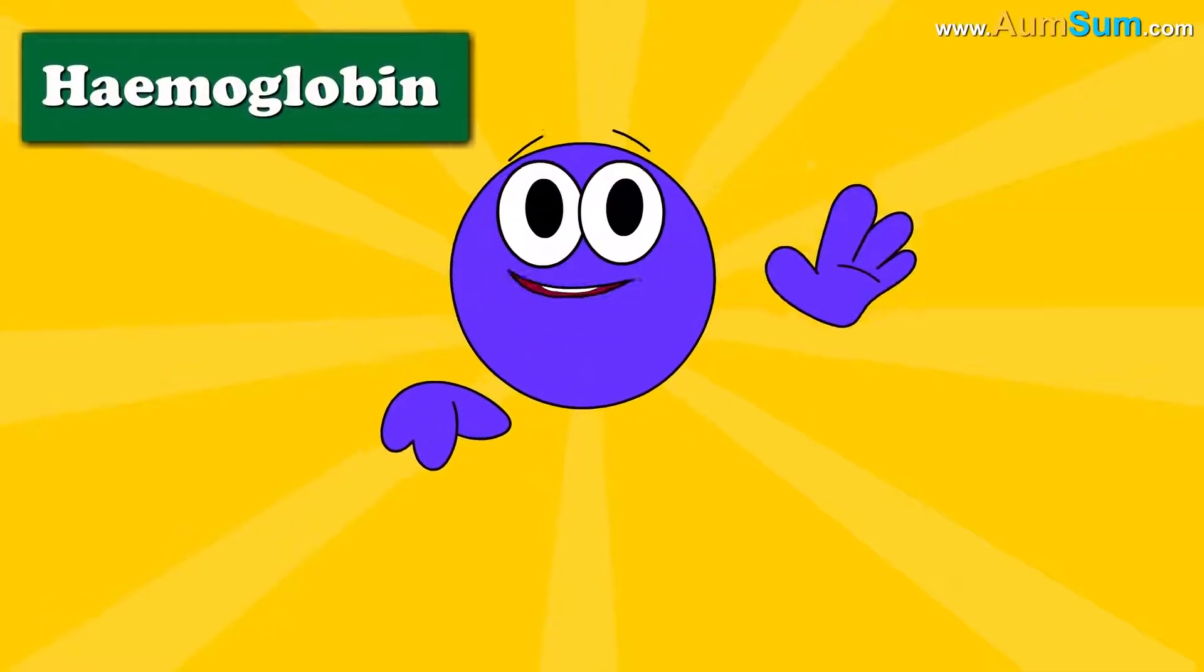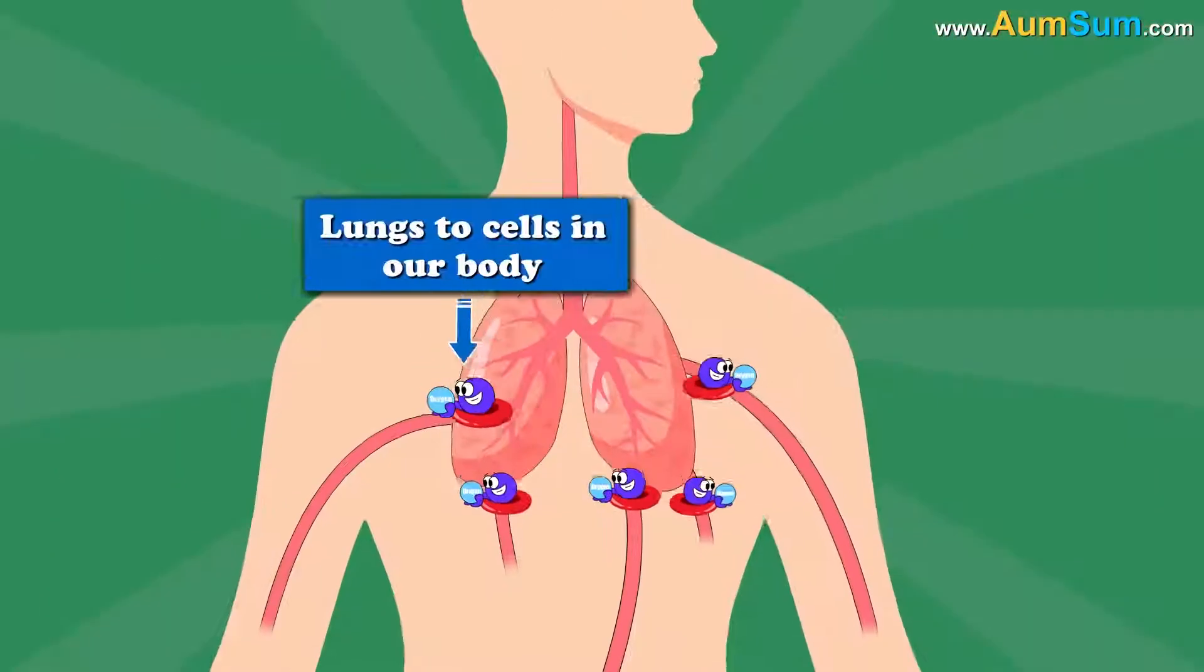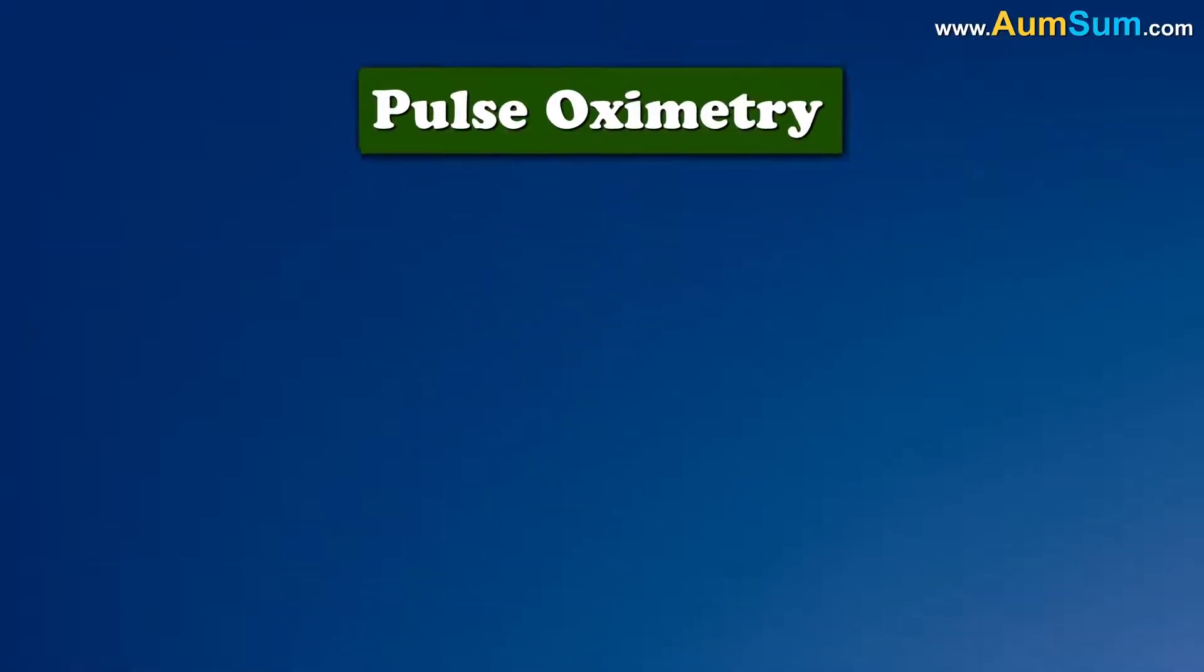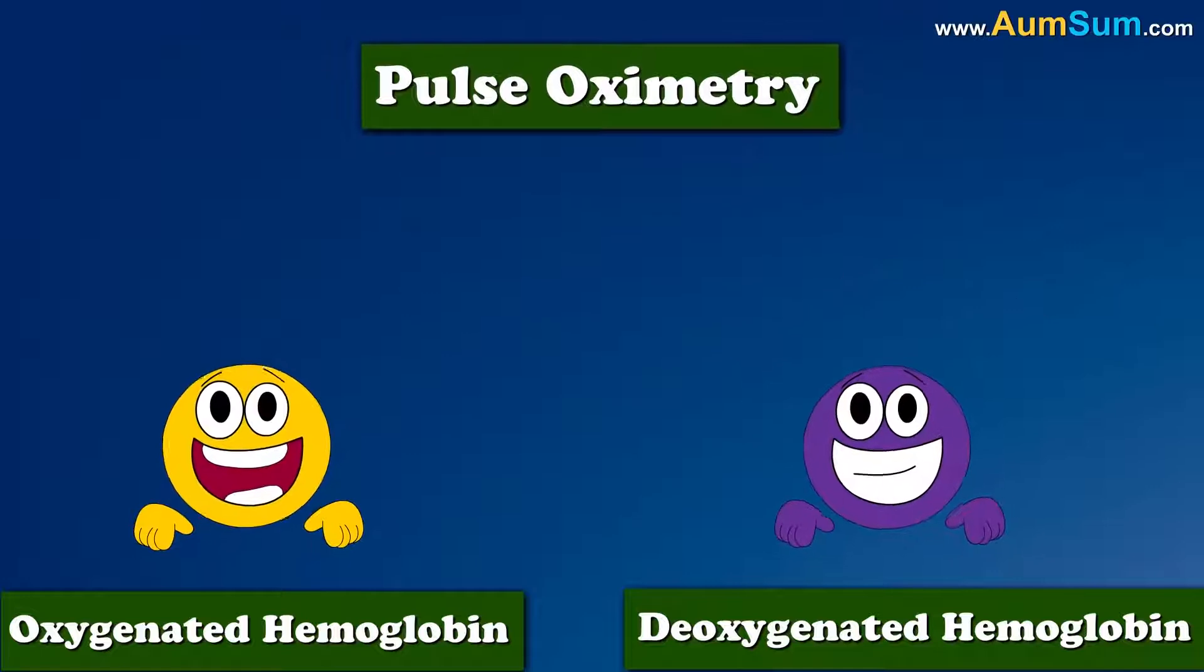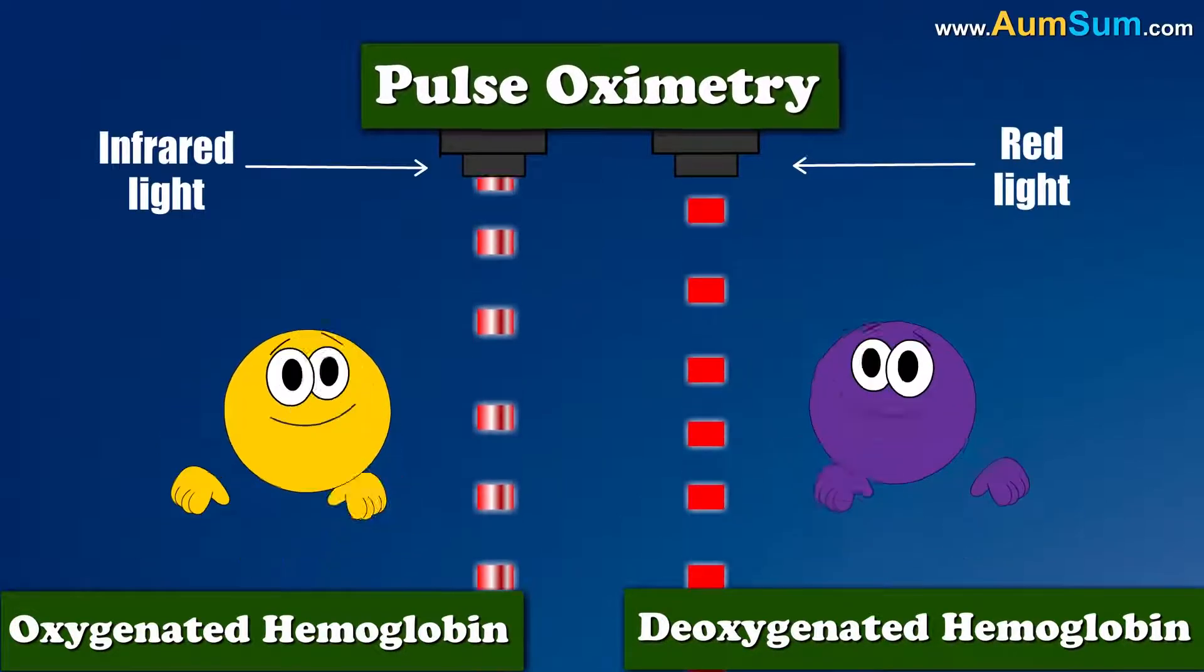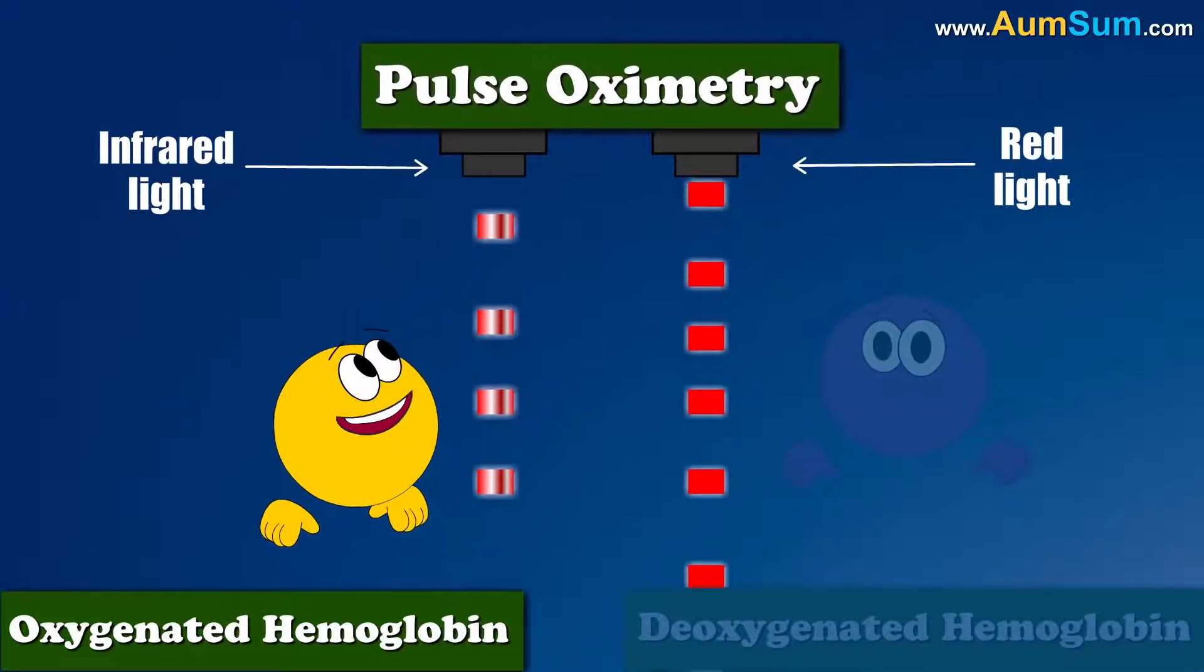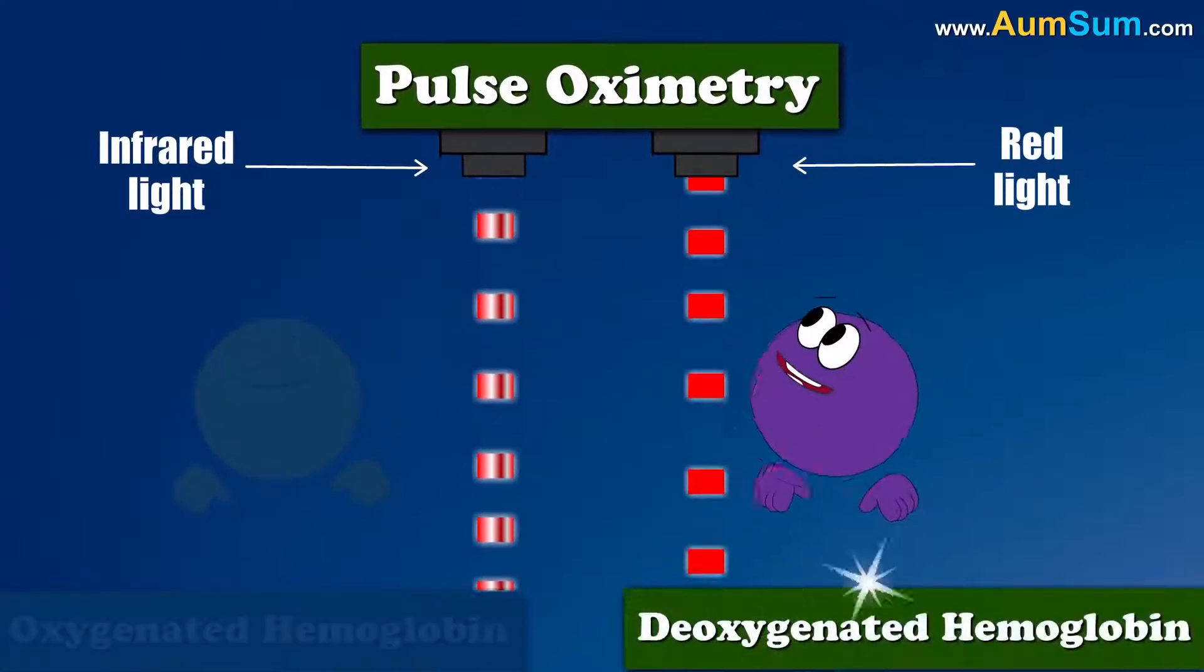Hemoglobin is a protein present in our red blood cells. It transports oxygen from lungs to cells in our body. Pulse oximetry is based on the principle that oxygenated hemoglobin and deoxygenated hemoglobin differentially absorb red and infrared light.